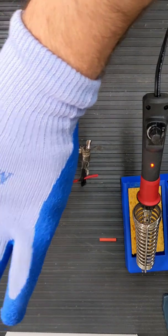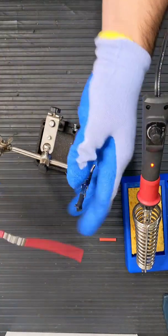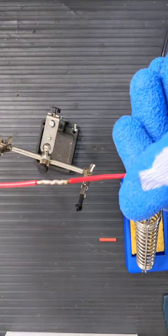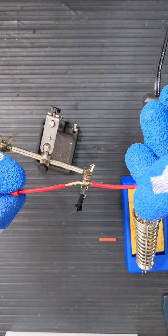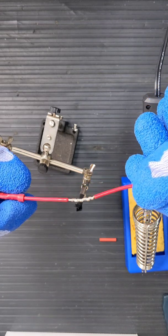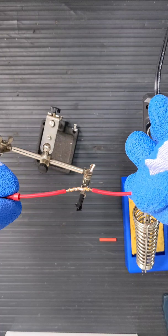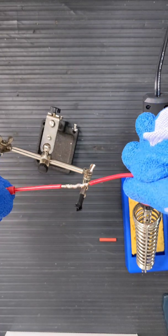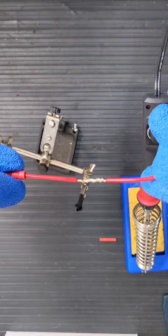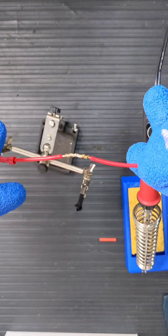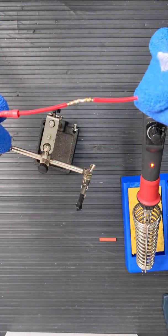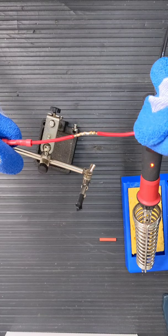That's how you want your solders to look like. See how it drew it in even underneath? We only soldered from the top, but it drew it in around the whole solder joint. So that's what you want it to look like. Your next step is heat shrinking.